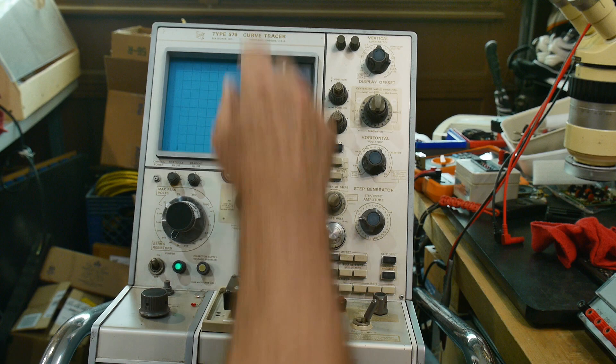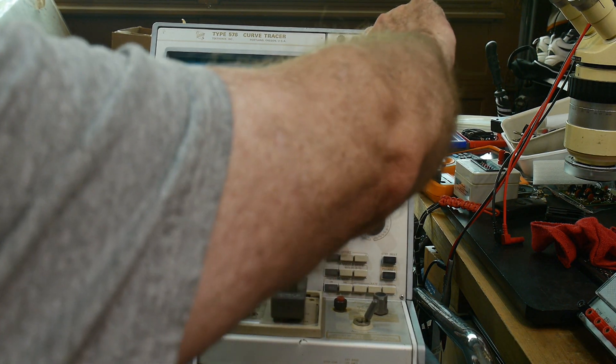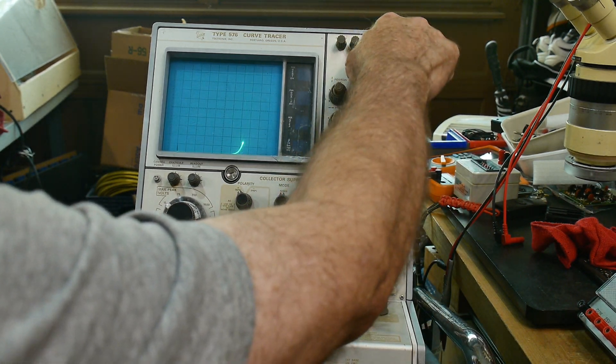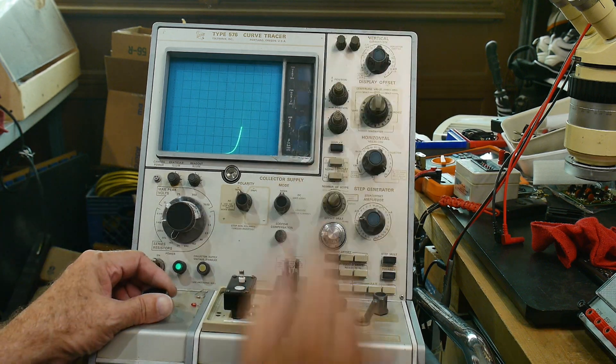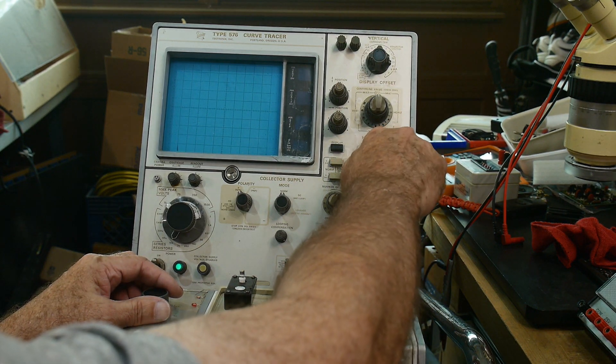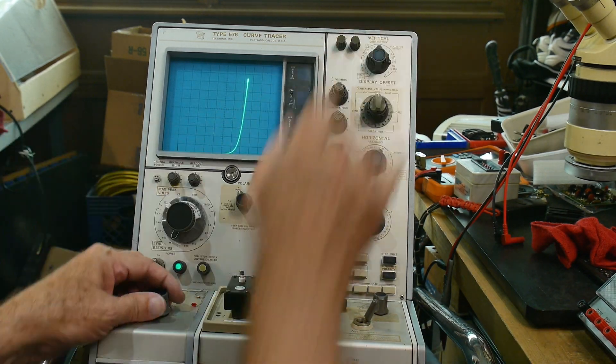All right. So we have a diode in here. We're curve tracing. Look at this. I can change the amplitude of the vertical now. Yay. I can make it small. I can make it big. I can make the horizontal small. I'll make it big. So that is all working now. Yay.